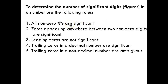The first rule: if the digit is not a zero, it's significant. The second rule: zeros appearing anywhere between two non-zero digits are significant. Leading zeros, however, are not significant — that's really important. Trailing zeros at the end of a decimal number are significant. And the last rule: trailing zeros in a non-decimal number are ambiguous.